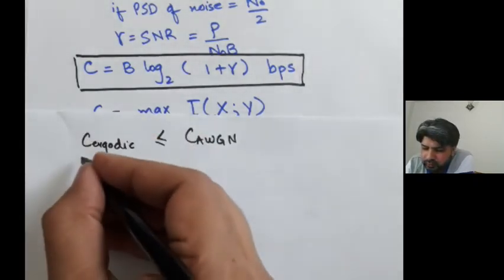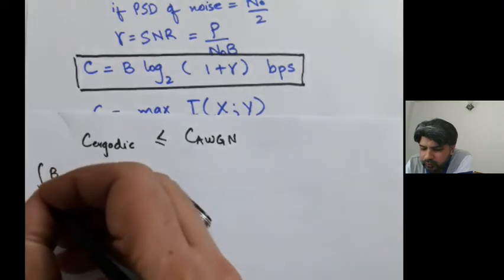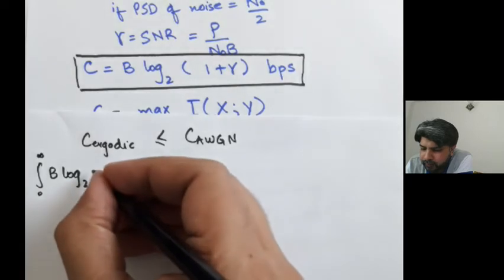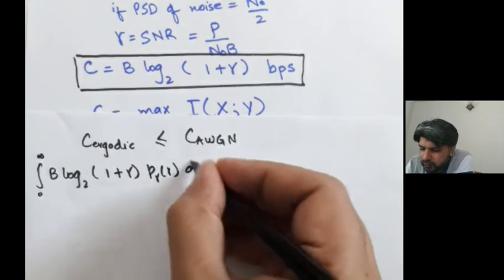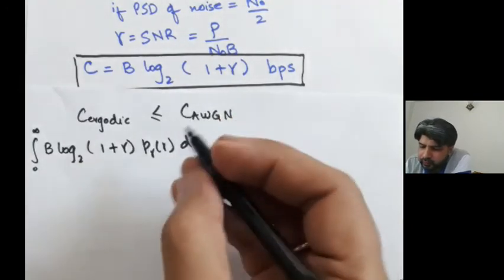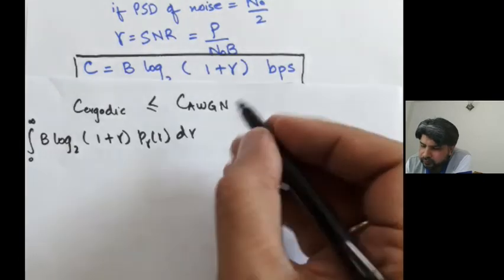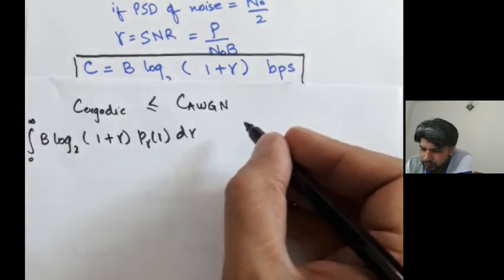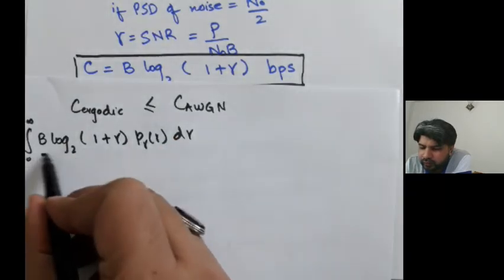We know that this C ergodic is B integrated from zero to infinity, B log base 2 of 1 plus gamma p of gamma d gamma. If you compute average of this quantity.